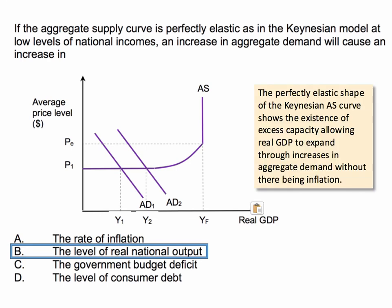The perfectly elastic portion of the aggregate supply curve in the Keynesian model shows the existence of spare or excess capacity. This allows the level of real national output to grow and expand through increases in aggregate demand without triggering an increase in inflation. Clearly, as we get closer to the capacity level of national output YF, the level of inflationary pressure will increase.